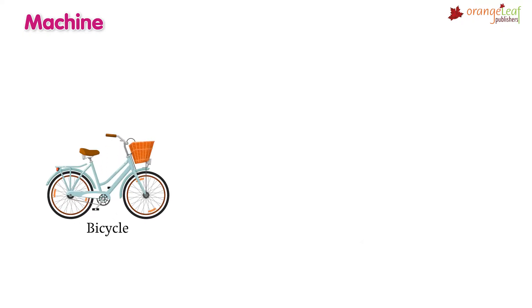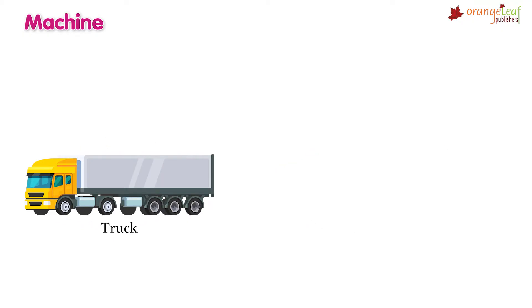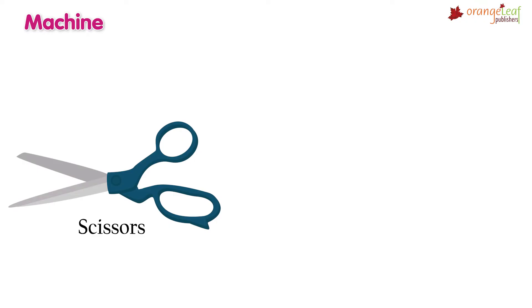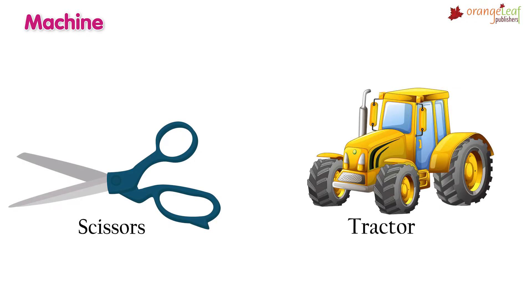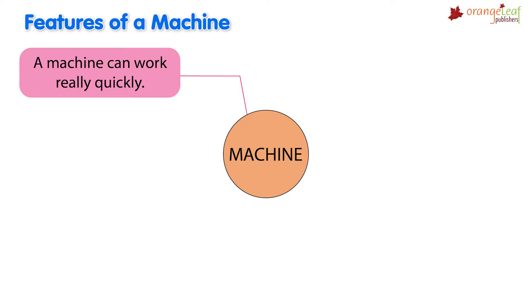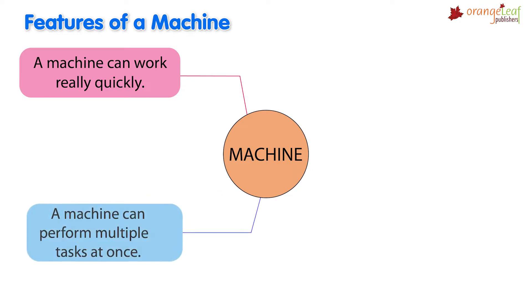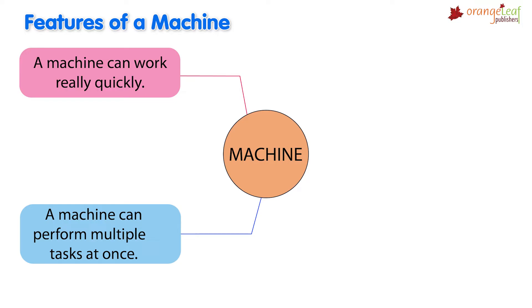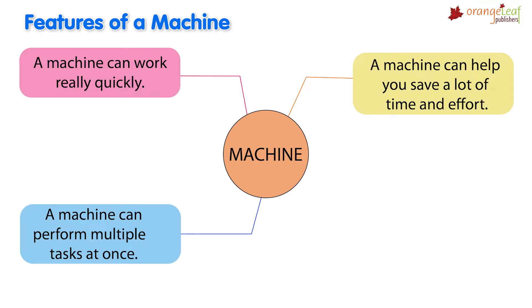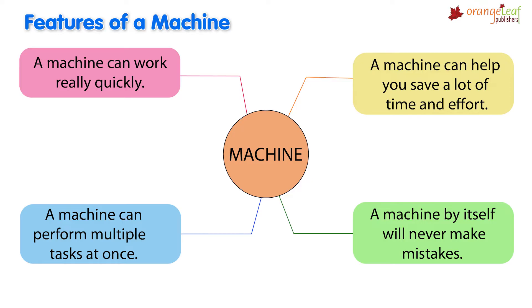Examples of machines include: bicycle, car, truck, clock, lamp, aeroplane, scissors, and a tractor. Features of a machine: a machine can work really quickly, it can perform multiple tasks at once, it can help you save a lot of time and effort, and a machine by itself will never make mistakes.